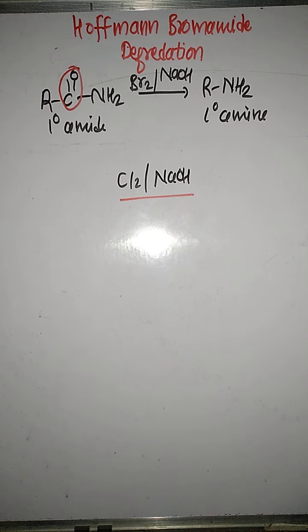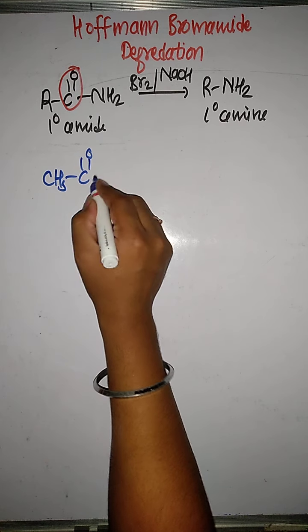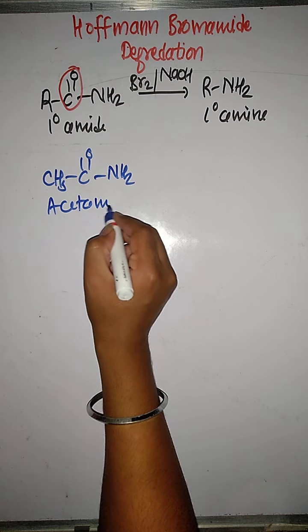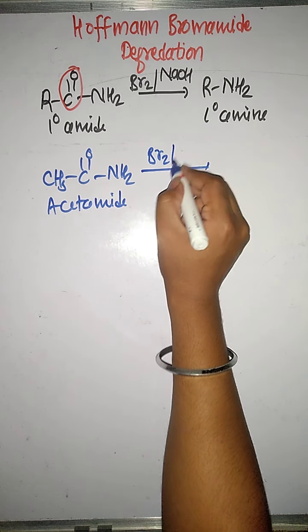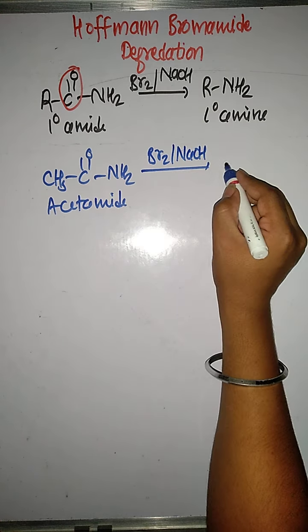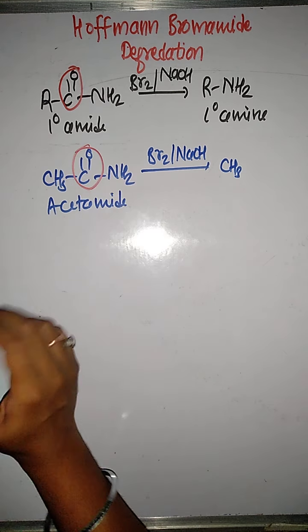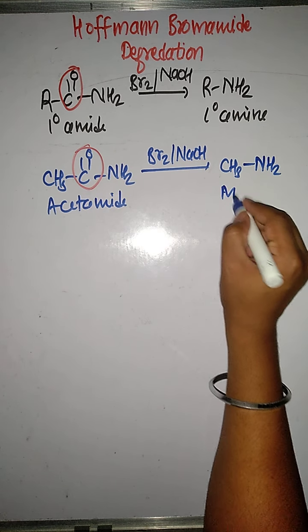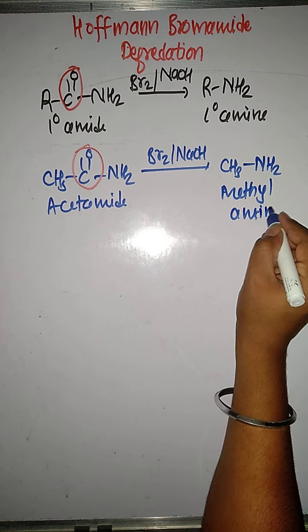For example, if we have CH₃–C(=O)–NH₂, the name of this compound is acetamide or ethanamide. When we react it with basic bromine in presence of NaOH or KOH, the carbonyl group is removed and we get CH₃–NH₂, which is called methylamine or methanamine.